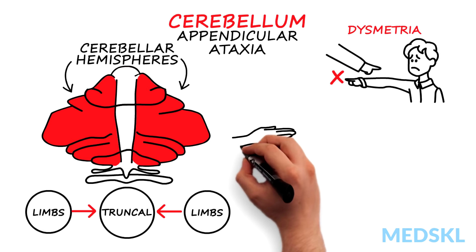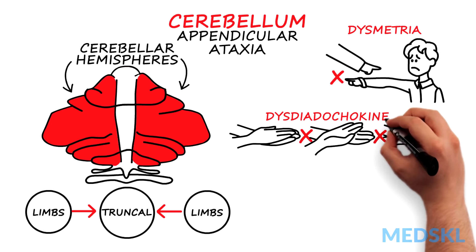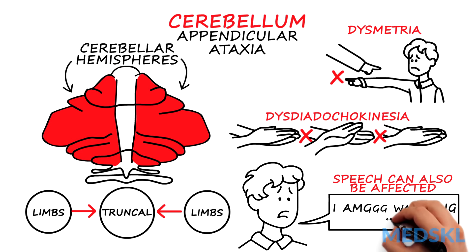They have problems judging distances, known as dysmetria, and are unable to maintain the rhythm or amplitude of the movements, known as dysdiadochokinesia. Speech can also be affected, with variations in intensity and slurring of words.